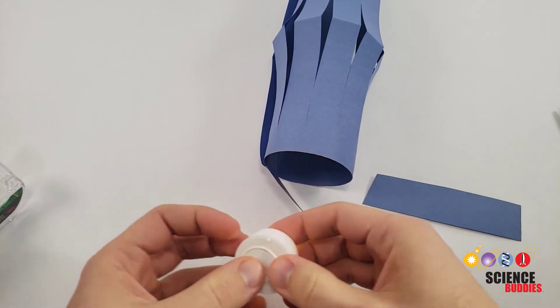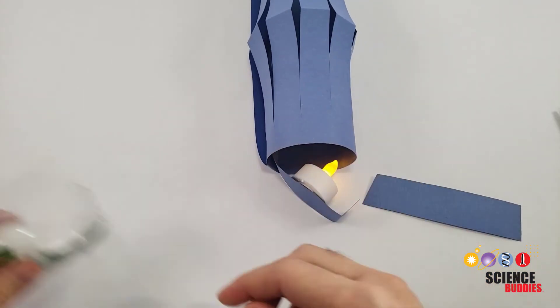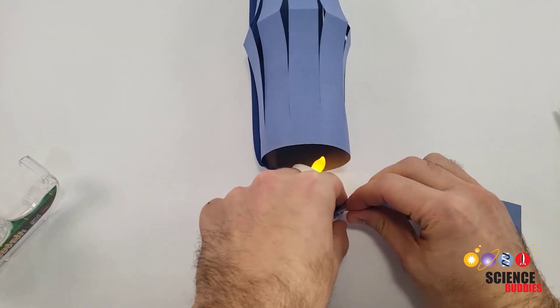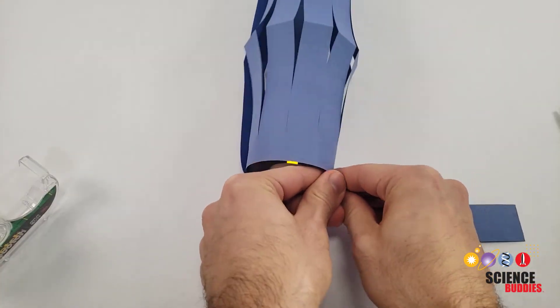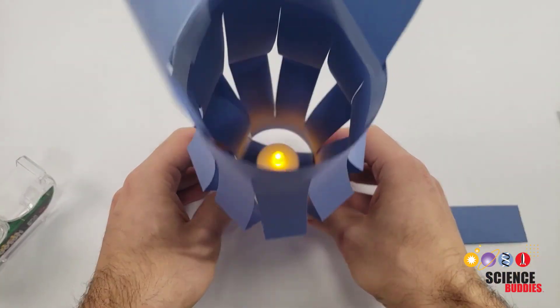Cut the other extra strip of paper in half. Tape the T-light to it and then tape the strip of paper to the bottom of the lantern to form a base so the T-light goes inside the lantern.